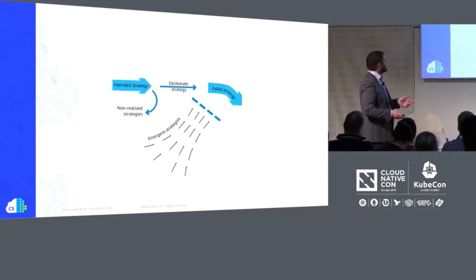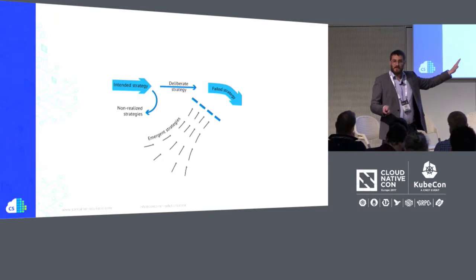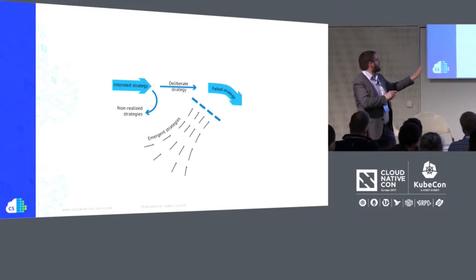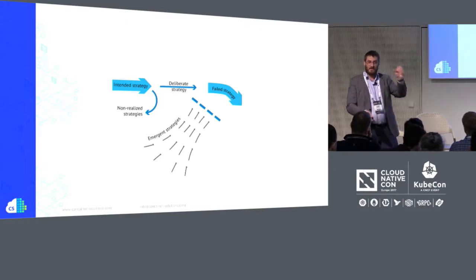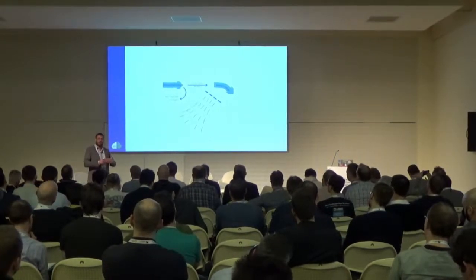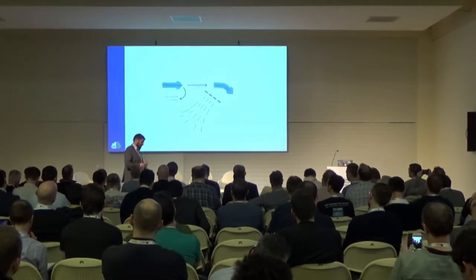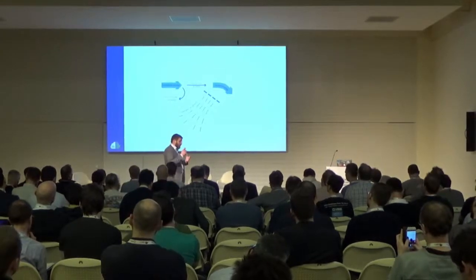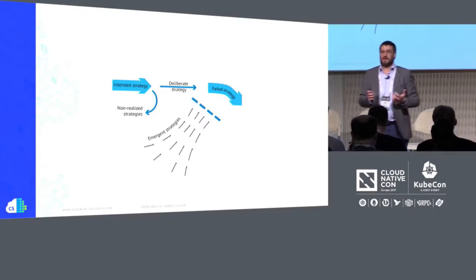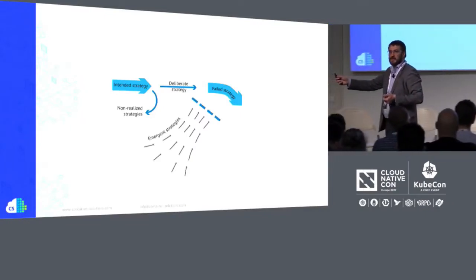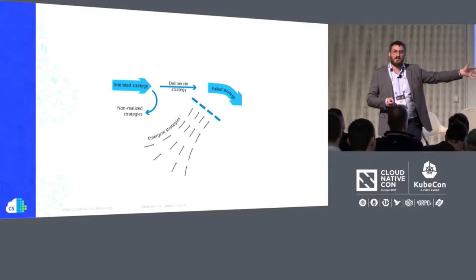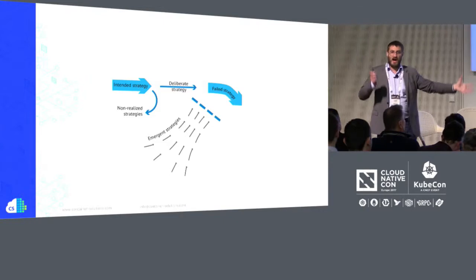Often we get to a place where we plan the work and work the plan — we get exactly what we aimed for. But due to organizational constraints, we stop any emergence from happening. This becomes known as a failed strategy: that feeling where we get what we want but it's not quite enough — that's when you've not been learning. 100% emergence equals no control, but 100% deliberate strategy equals no learning. You have to strike that balance.